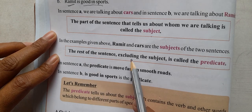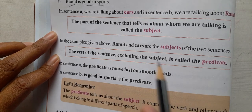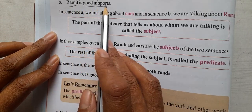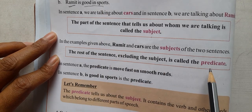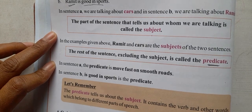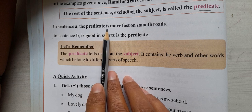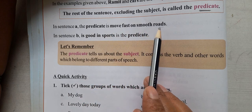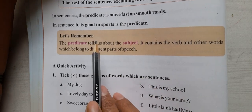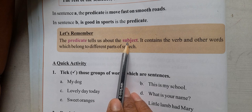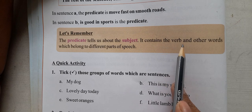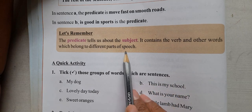The rest of the sentence, excluding the subject, is called the predicate. In sentence A, the predicate is 'moves fast on the smooth road.' In sentence B, the predicate is 'is good in a sport.' Remember: the predicate tells us about the subject. It contains the verb and other words belonging to different parts of speech.